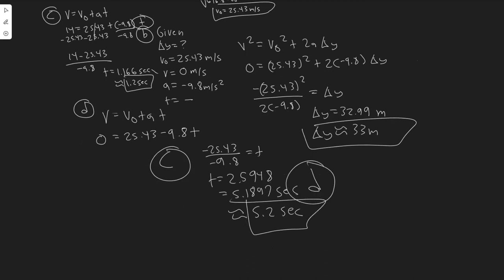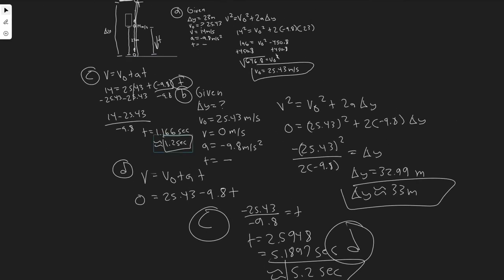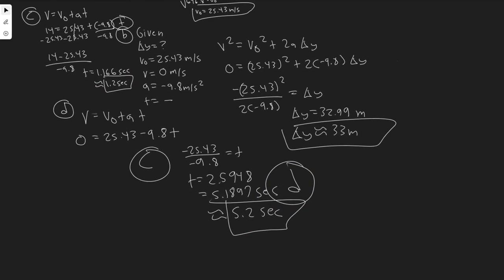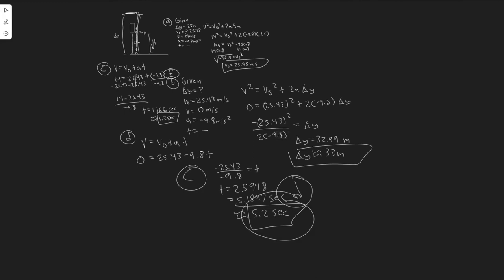To clarify: 5.2 seconds is the total time from when the ball is thrown until it reaches the street again. If you subtract the 1.2 seconds from C, it would reach the street about 4 seconds after passing the window. Make sure you understand how the question is phrasing it. These are all your answers — hopefully you found this useful.